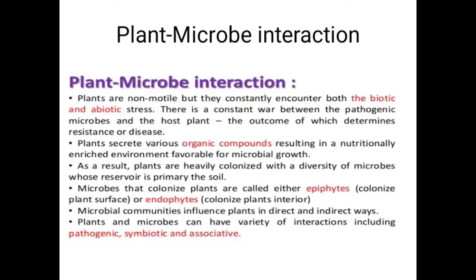جب میکروب پیتھوجینک ہوتے ہیں تو رزلٹ دو ہی آ سکتے ہیں: یا تو پلانٹ ریزسٹنٹ حاصل کر لے گا، یا پھر میکروب بیماری کاز کر دے گا۔ پلانٹس ویریس آرگینک کمپونٹ سیکریٹ کرتے ہیں جو میکروبیل گروتھ کے لیے ایک فیوریبل انویرنمنٹ بناتے ہیں۔